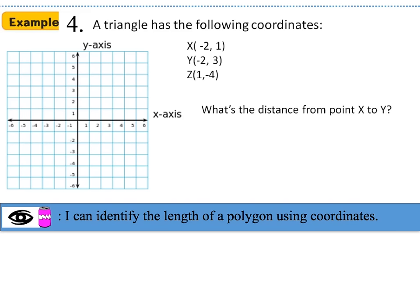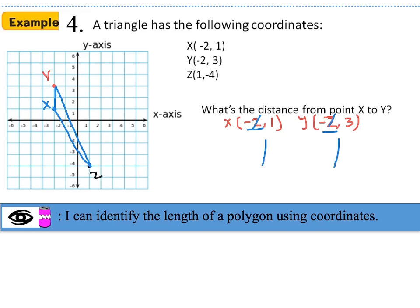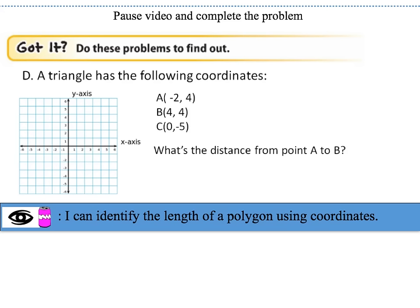Example 4: A triangle has vertices X (−2, 1), Y (−2, 3), and Z (1, −4). We plot these points on the coordinate plane and connect the vertices to form a triangle. To find the distance from point X to point Y: the x-coordinates are both −2, so we find the absolute value difference of the y-coordinates: |3 − 1| = 2. The distance from X to Y is 2, and we can verify there are two boxes between those vertices.